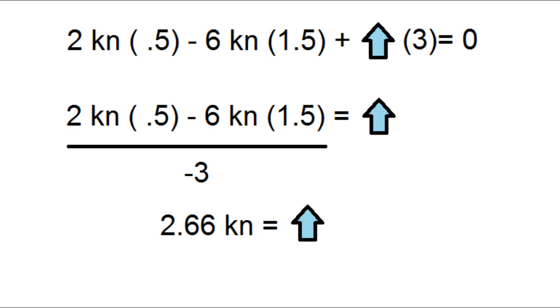This all equals zero. So after we do a little rearranging, we get 2.66 kilonewtons as the reaction at the blue circle.